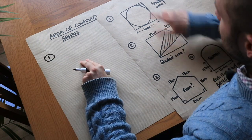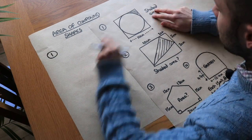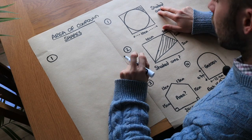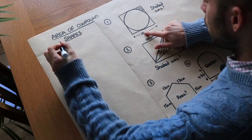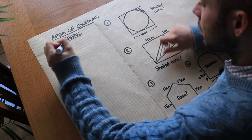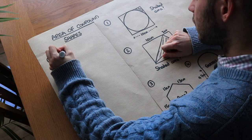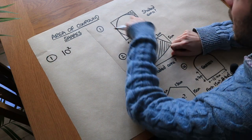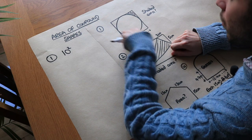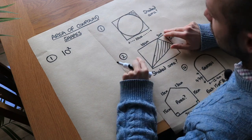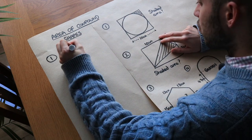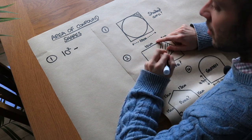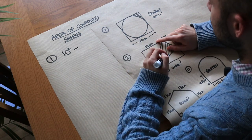So we want to find the shaded area. It's best to start with the area of the square, which is 10 times 10, so 10 squared. And then we're going to subtract — we're going to cut out — the area of the circle in the middle. So we subtract the area of this circle, which is pi times the radius squared — remember pi r squared.